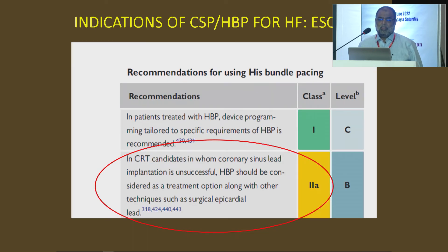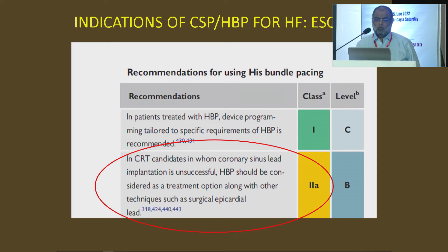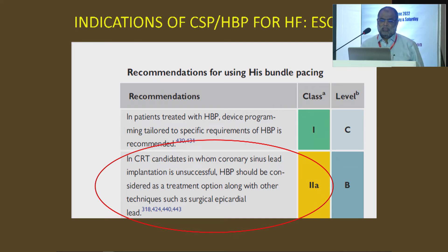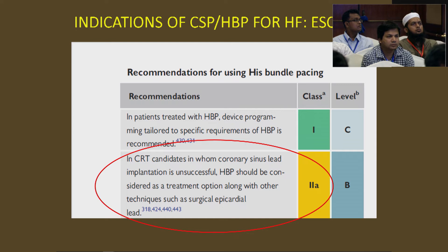Regarding conduction system pacing or His bundle pacing in heart failure: if the patient is not suitable for CRT — that is, if the coronary sinus lead cannot be implanted or implantation is unsuccessful — His bundle pacing or left bundle branch pacing is an option, and this is a Class 2A indication.